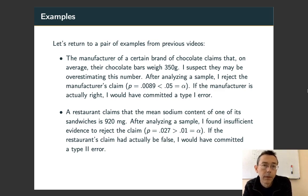Example 2. A restaurant claims that the mean sodium content of one of its sandwiches is 920 milligrams. I analyze a sample but find insufficient evidence to reject the claim at alpha equals .01. Now, if the restaurant's claim had actually been false, if for example the mean sodium content of its sandwiches was 950 milligrams, I would have committed a type 2 error.